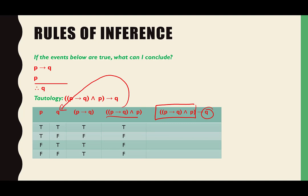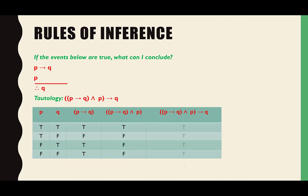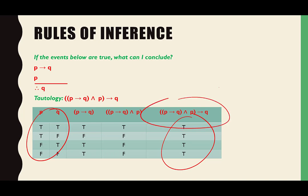True therefore true — the truth value is true. For all the other rows, when the starting point is false, it always evaluates to true. When it comes to a proof, if the starting point is not true, we don't care — if I did not win the lottery, it doesn't matter if I give you a dollar or not. This final equation is always true. That's called a tautology.